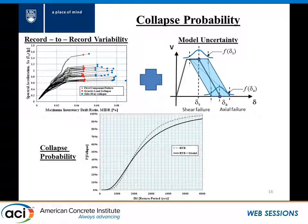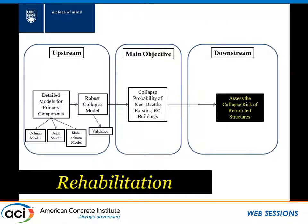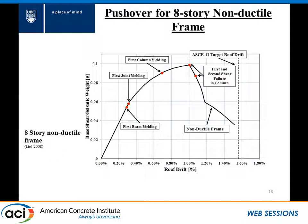Looking at the figure, the dotted gray line considers only record-to-record variability. When you add model uncertainty, you get an increase in your standard deviation. Now that we have a good understanding of our model and can simulate collapse and come up with collapse probabilities, we can assess the risk of these retrofitted buildings. For this study, we chose an eight-story non-ductile moment frame designed by Dr. Lail based on pre-1970 codes.